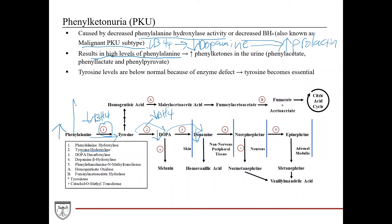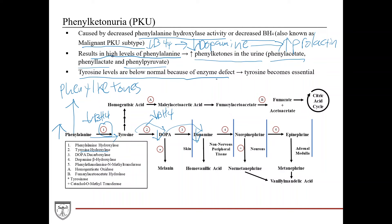Phenylalanine can be broken down into phenylketones. One way to diagnose PKU is by seeing increased levels of phenylketones in the urine — specifically phenylacetate, phenyllactate, and phenylpyruvate. Also, tyrosine levels are below normal because of this enzyme defect, causing tyrosine to become an essential amino acid. PKU has autosomal recessive inheritance.